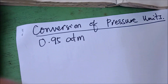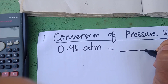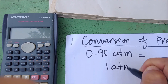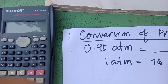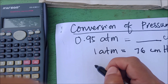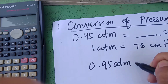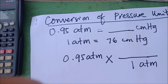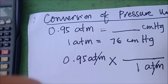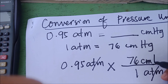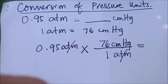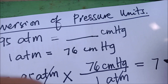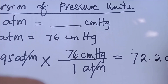Now let's have conversion of pressure units. If you're given 0.95 atmosphere and you need the value in cmHg, the conversion factor states that for every 1 atmosphere you have 76 cmHg. Apply that in your solution: 0.95 atmosphere multiplied by the conversion factor — 1 atmosphere in the denominator to cancel the unit, and 76 cmHg in the numerator. So 0.95 times 76 divided by 1 gives 72.2 cmHg.